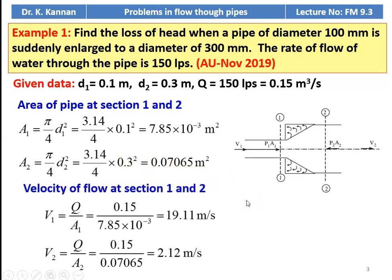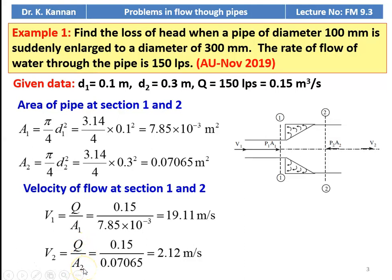We calculate the velocity of flow at sections 1 and 2. V1 = Q/A1 = 0.15 / (7.85 × 10⁻³) = 19.11 m/s. V2 = Q/A2 = 0.15 / 0.07065 = 2.12 m/s.